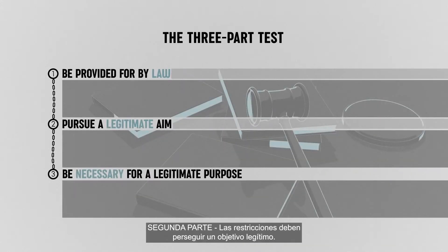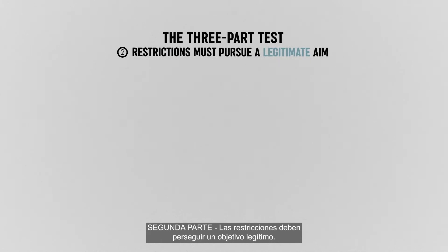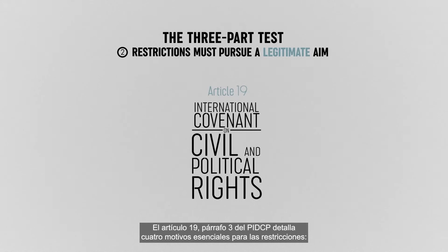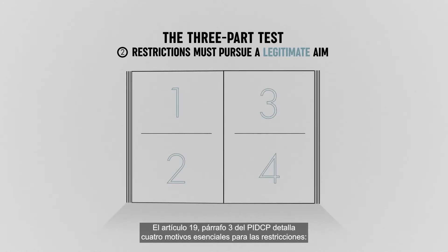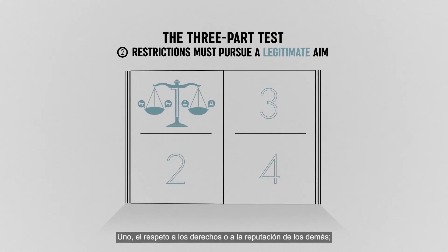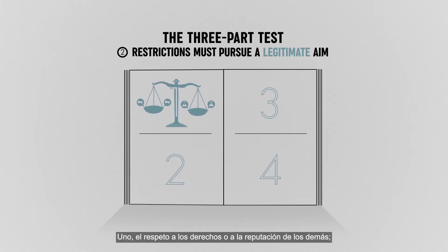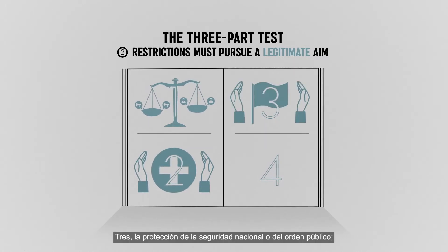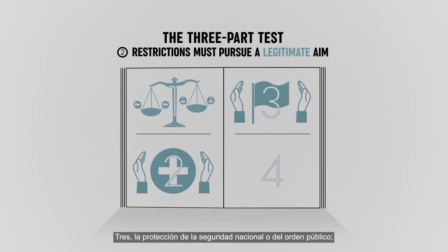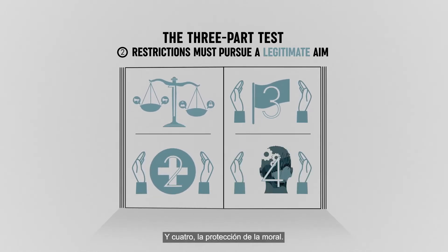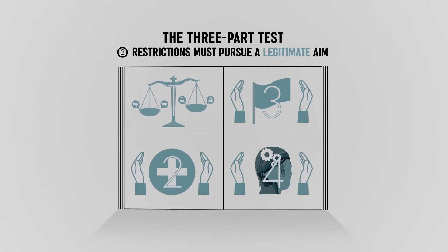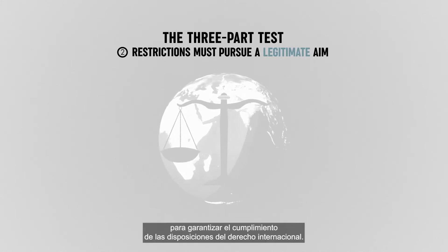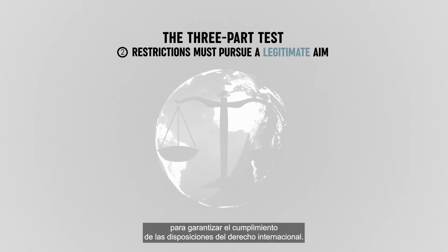Part 2: Restrictions must pursue a legitimate aim. Article 19, paragraph 3, of the ICCPR details four essential grounds for restrictions: 1. Respect of the rights or reputations of others. 2. The protection of public health. 3. The protection of national security or of public order. 4. The protection of morals. These grounds for restrictions must be narrowly framed in order to ensure compliance with international law provisions.